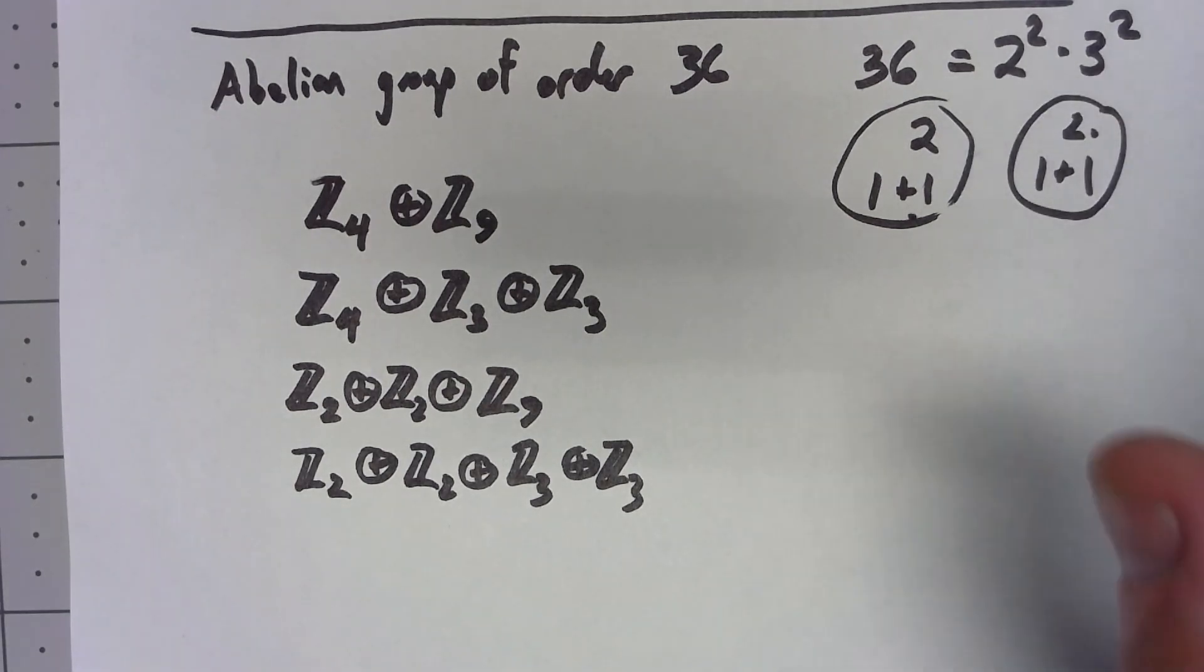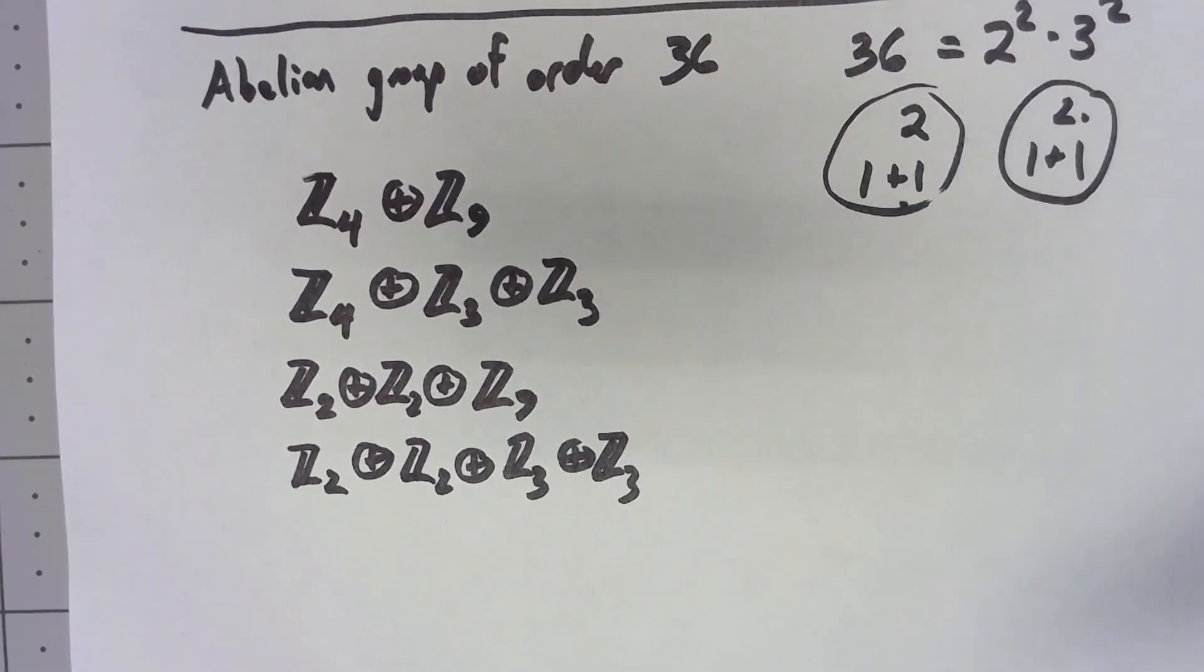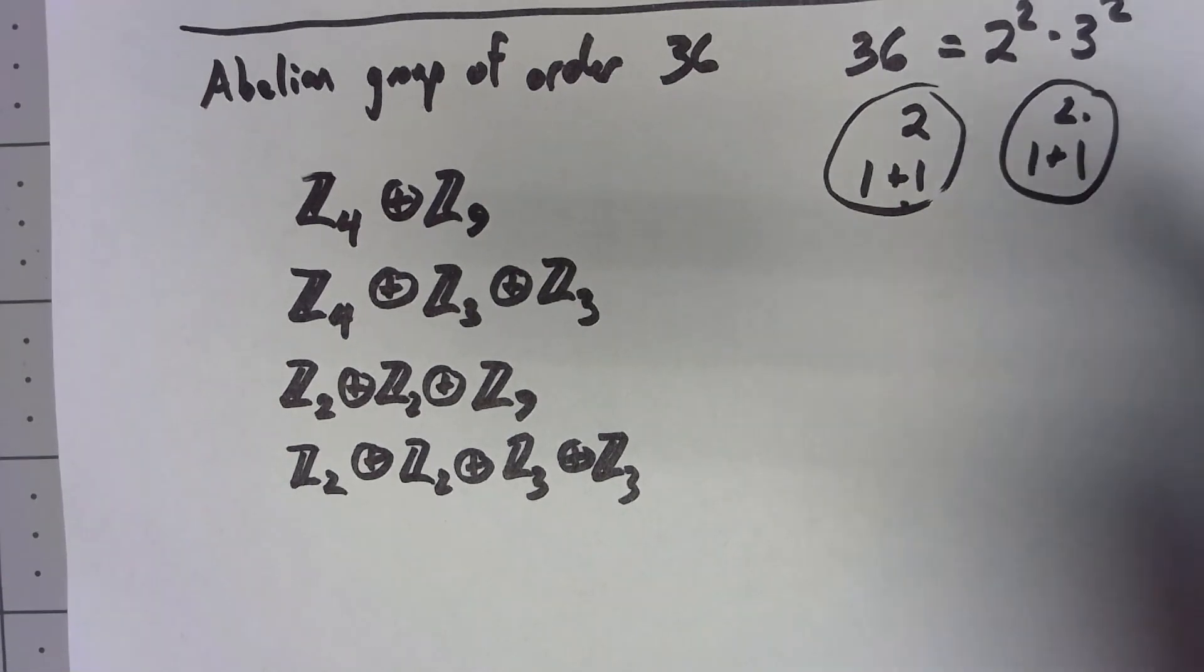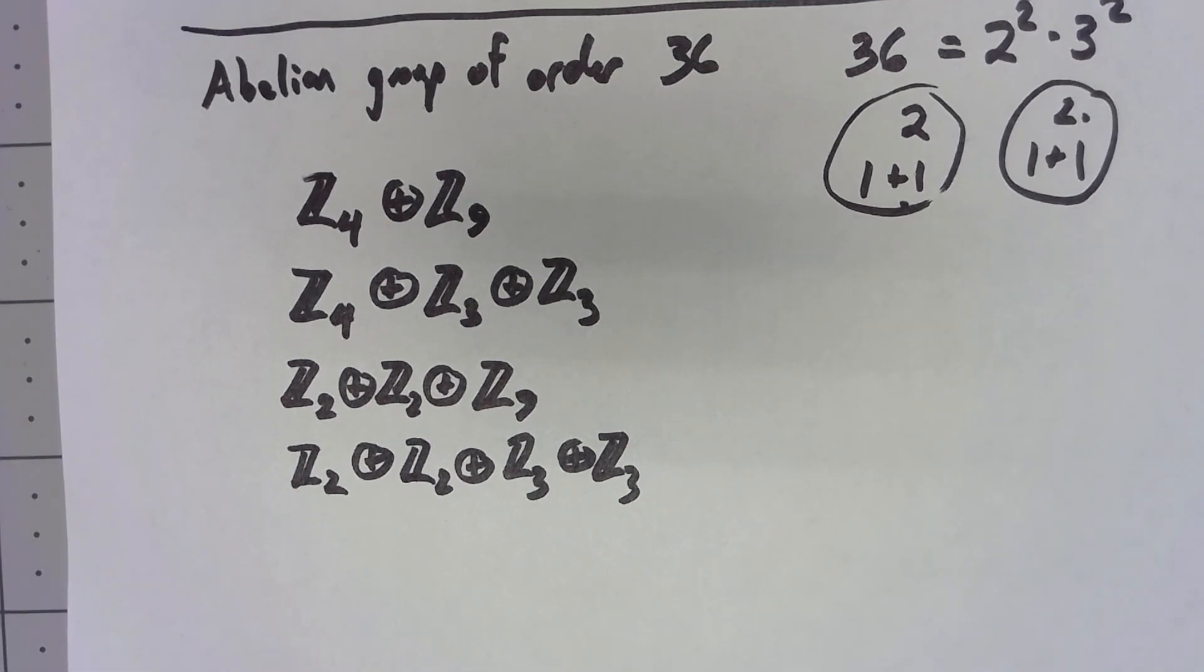Being able to do this, being able to take every finite abelian group and say everyone is one of these possibilities is incredibly powerful. By limiting what our possibilities are, we can really learn a lot about what's going on with finite abelian groups.